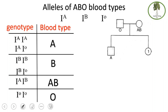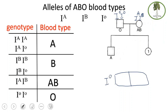This pedigree shows the inheritance of blood types. The mother is blood type AB (genotype I^A I^B) and the father is blood type O (genotype I^O I^O). The father can only produce I^O gametes, while the mother produces either I^A or I^B gametes. Crossing them gives 50% I^A I^O (blood type A) and 50% I^B I^O (blood type B). The ratio is 1:1.